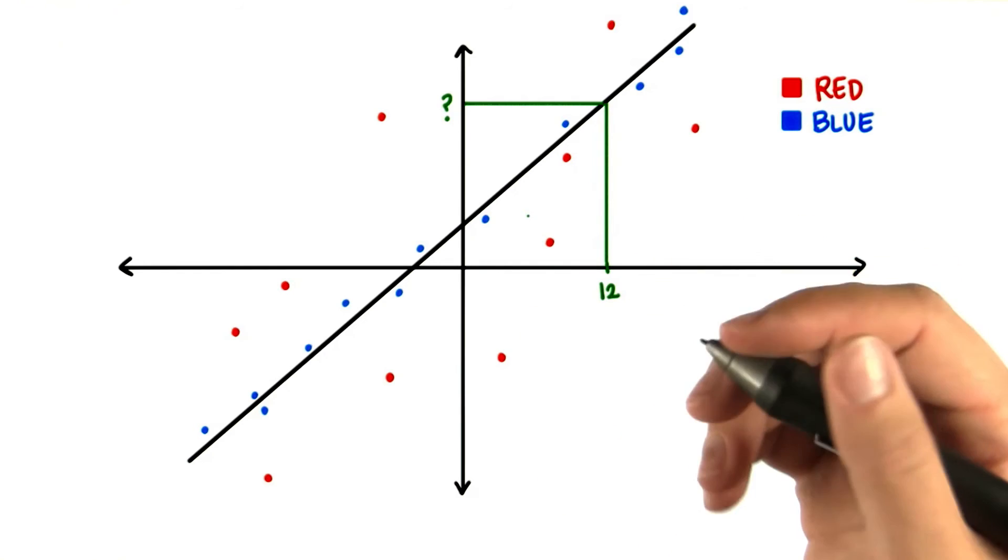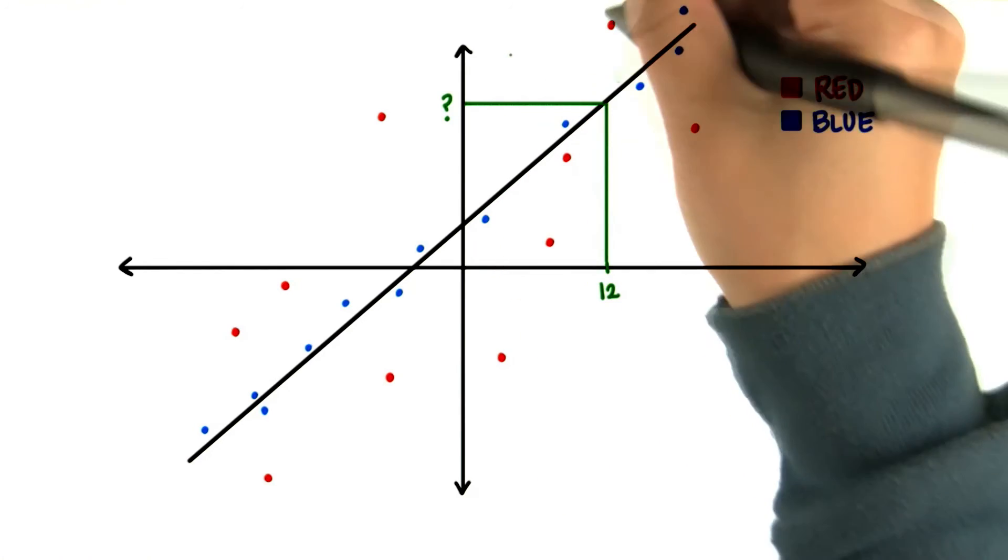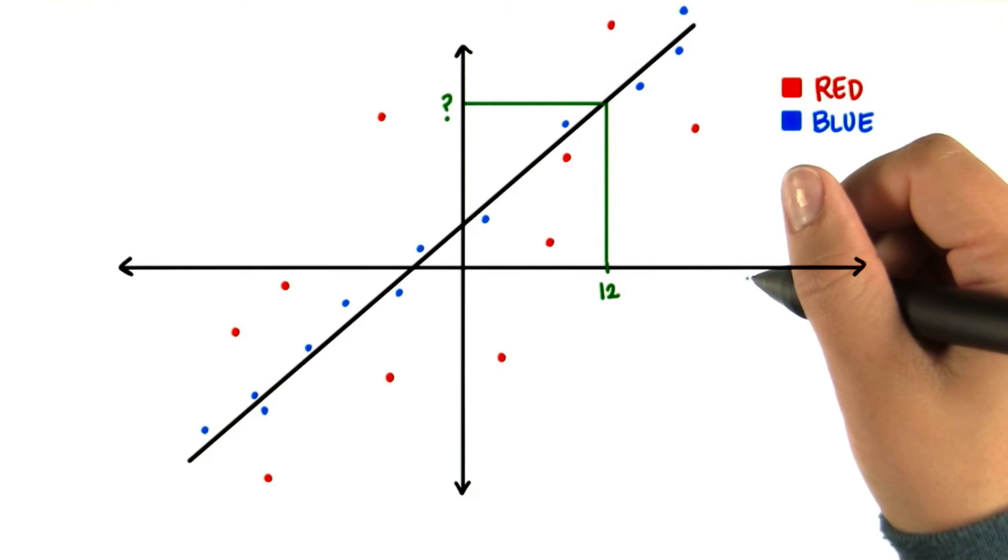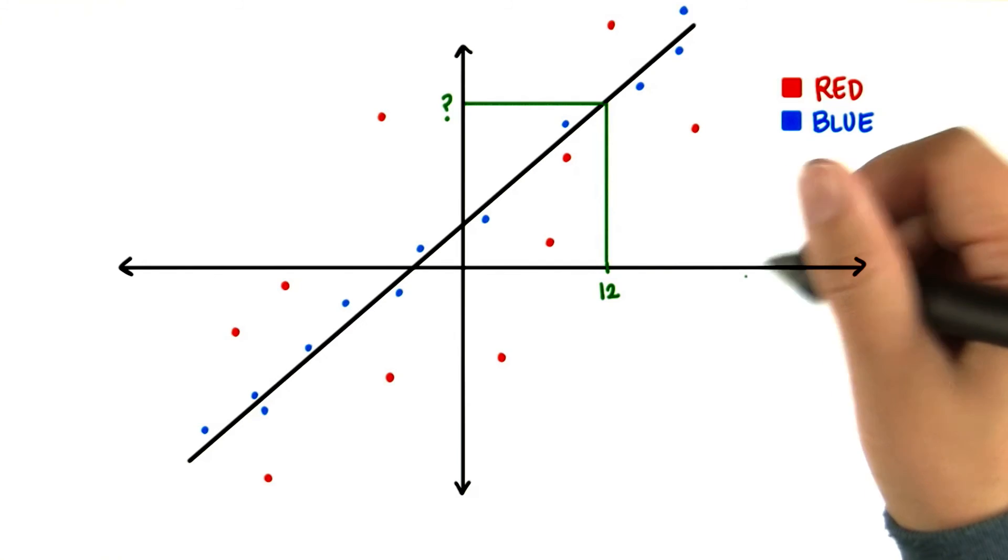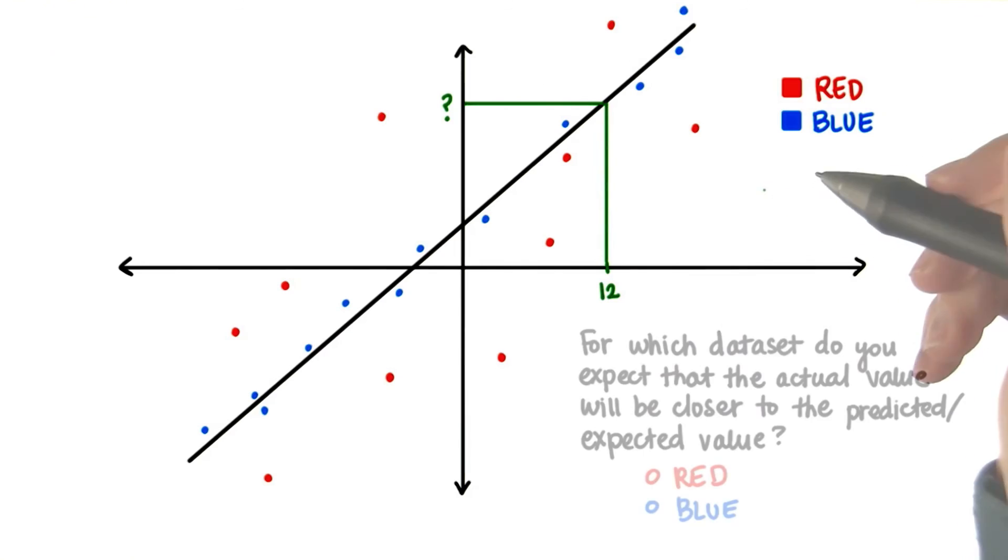But we can bet that the actual or observed value won't be exactly equal to this. It might be somewhere up here or down here. We won't know. We can only guess. But for which data set, red or blue, do you expect the actual measurement will be closer to the prediction?